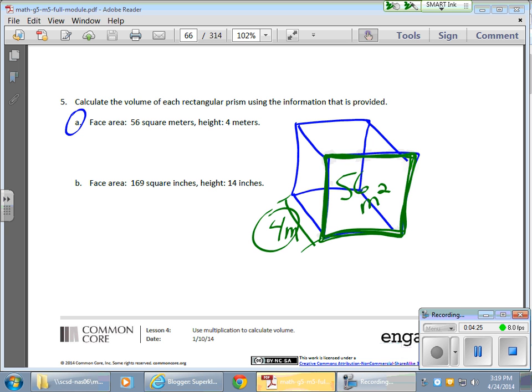So in other words, in this case, to find the volume, I'm going to take the area, which in essence is really the volume of the first layer, or the layer that the 56 is created from, or calculated from. And I'm going to multiply that by four, because I'm going to have four such layers. And once I calculate that, I'm in pretty good shape. So on the side here, I can take my 56, I can multiply that by four.